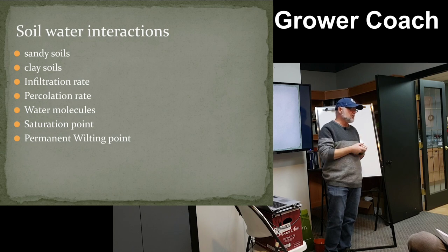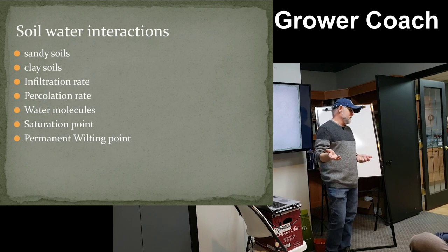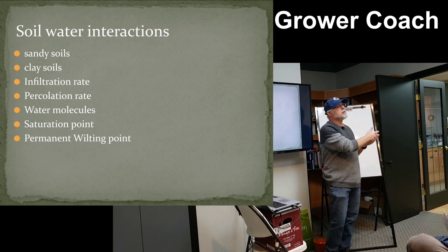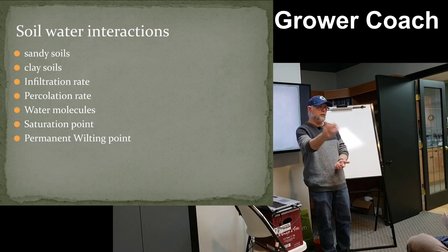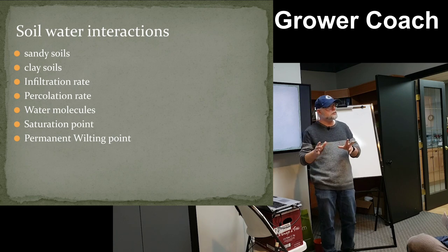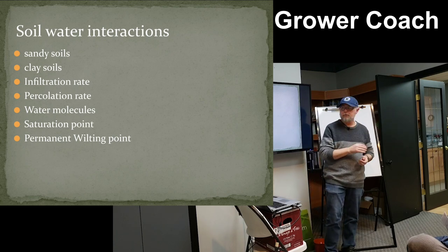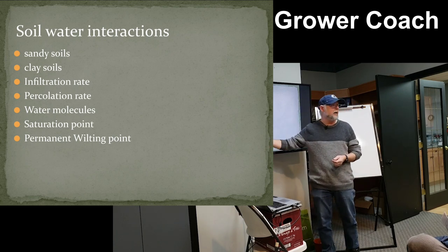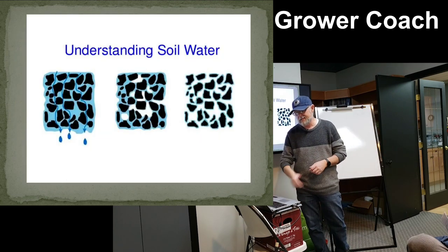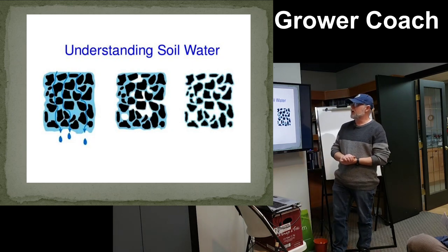At the permanent wilting point, leaves turn crispy and brown — it's not looking good. The plant is probably fine; this kind of thing happens in nature all the time. But in landscapes where people spend money on plants and see a brown leaf, they immediately panic. It hasn't lost its life, but it has dried out too much — gone to that permanent wilting point where some parts of the plant may not come back.